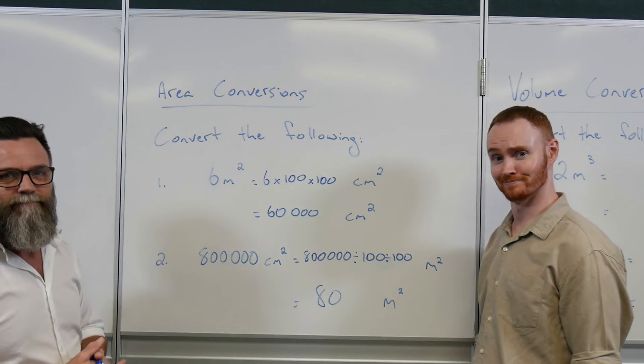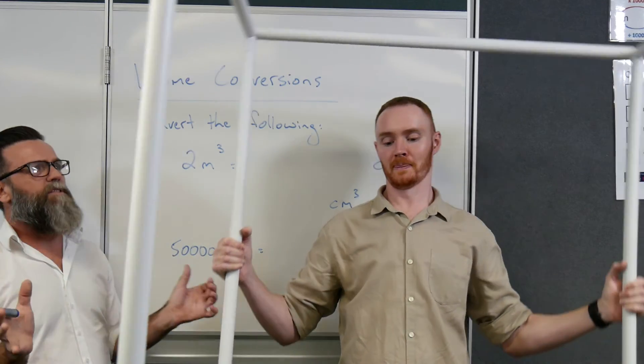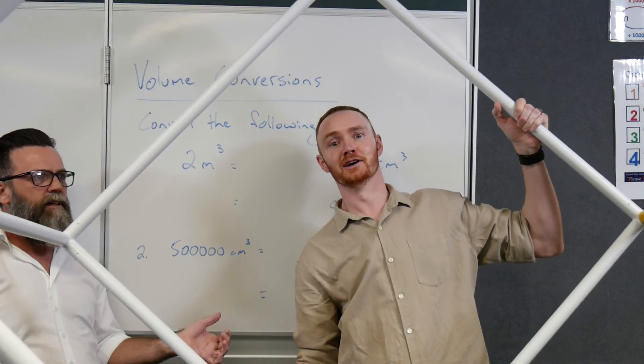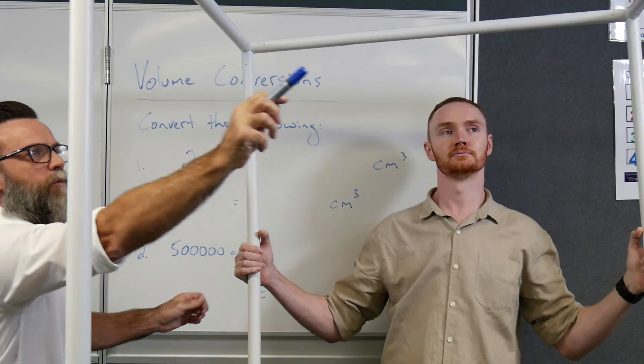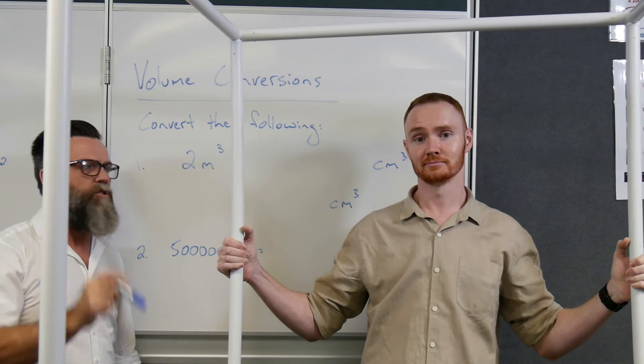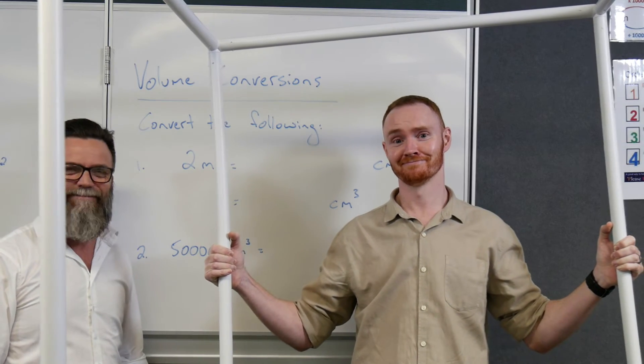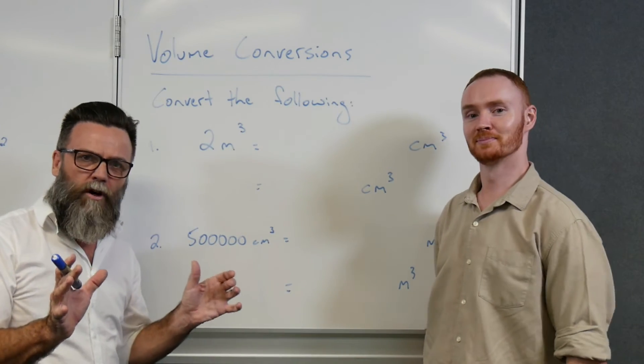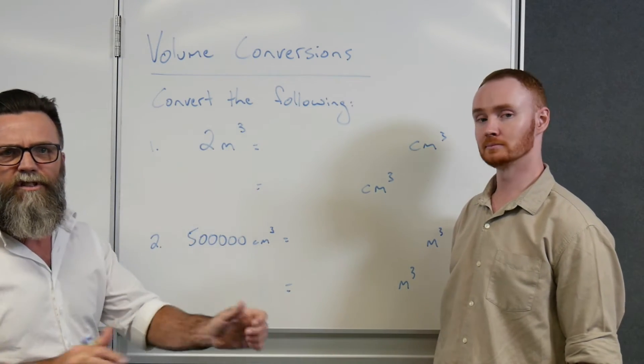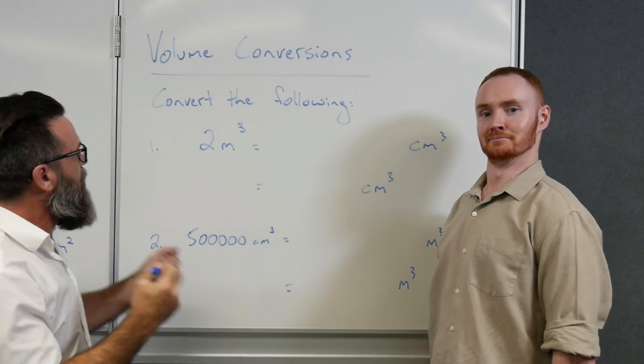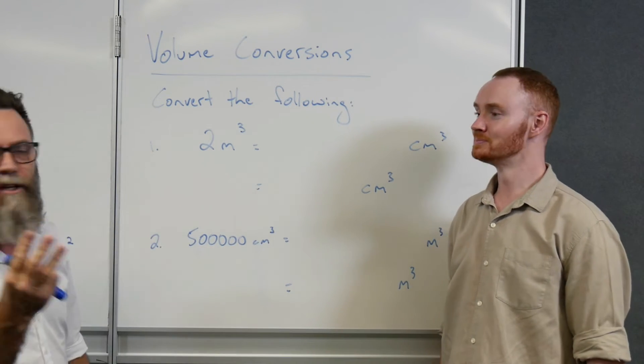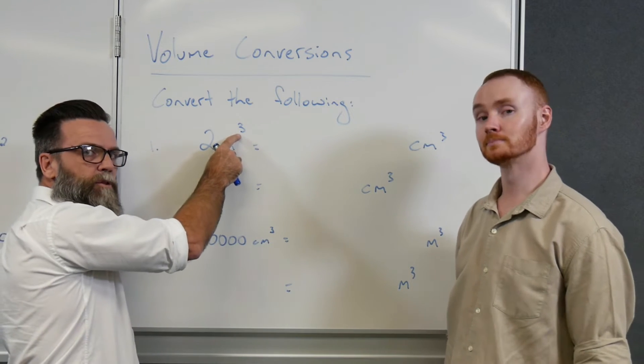So, over here, we start with our 800,000. Now, how many centimeters in one meter? 100. Absolutely. So, we know that if we just had centimeters and meters, we would need to divide that by 100. But we don't. We've got centimeters squared and meters squared. So, what else do I need to add to here? Divide it again. He's good. He's so good, this guy. Divide by 100 again. So, divide by 100, divide by 100 and we get a final answer of 80 meters squared.